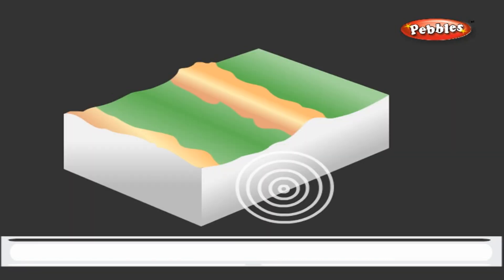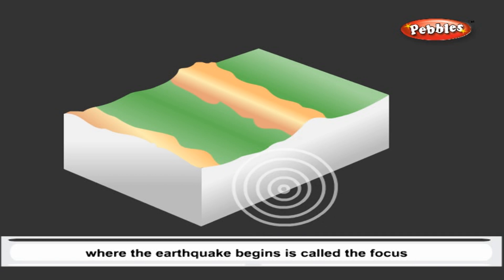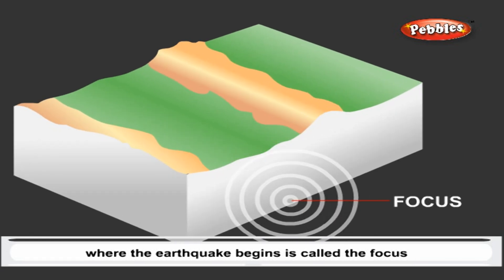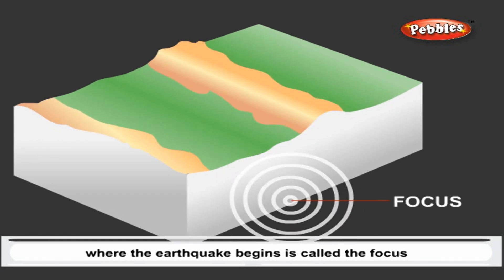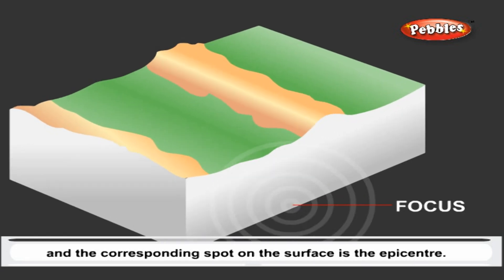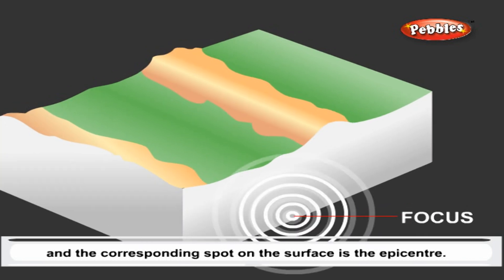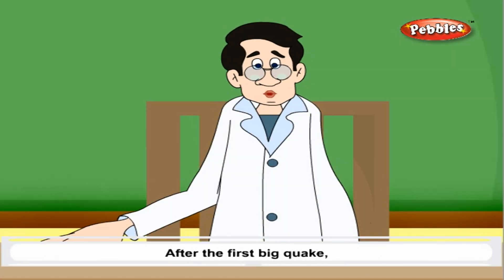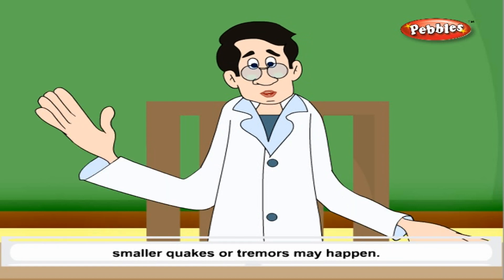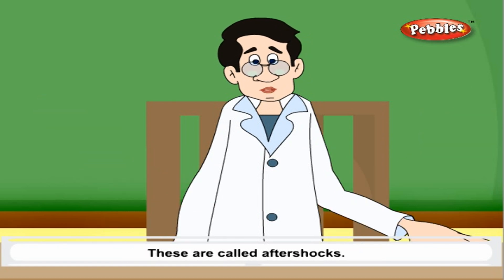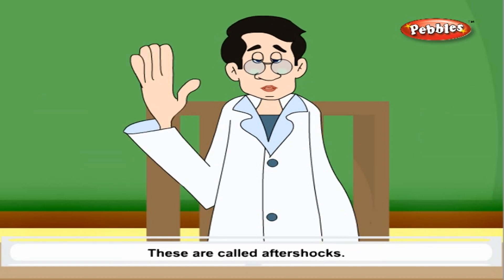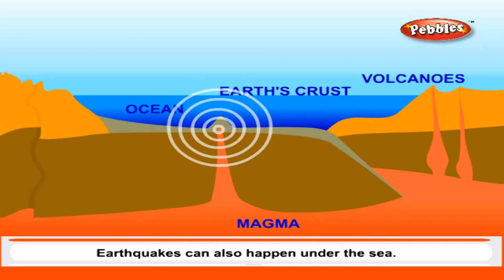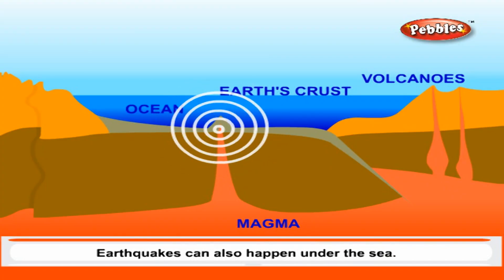Earthquakes. The point under the ground where the earthquake begins is called the focus, and the corresponding spot on the surface is the epicenter. After the first big quake, smaller quakes or tremors may happen — these are called aftershocks. Earthquakes can also happen under the sea.